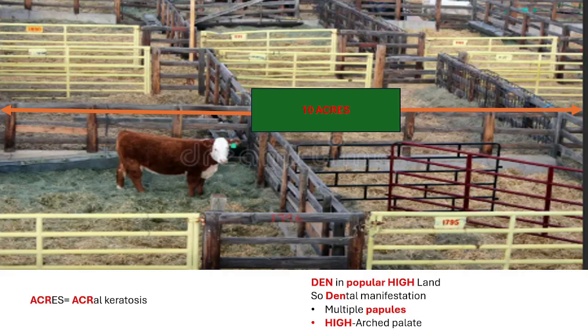Now let's talk about the homeland of the cow. This cow lived in a 10-acre land — again, the number 10 reminds you of the PTEN gene. And 'acre' here represents acral keratosis, a warty-appearing growth often seen on the dorsal surface of the hands.